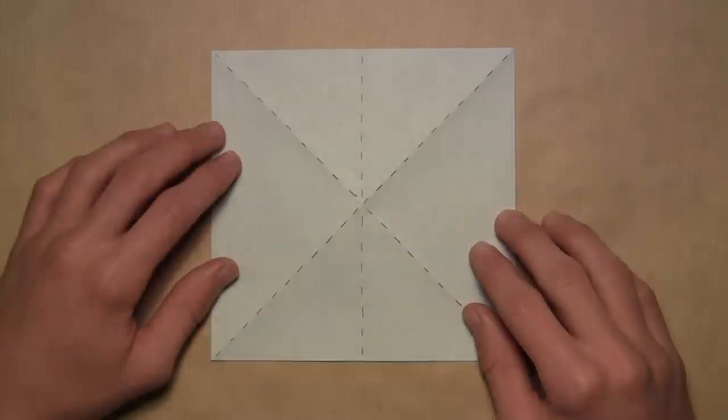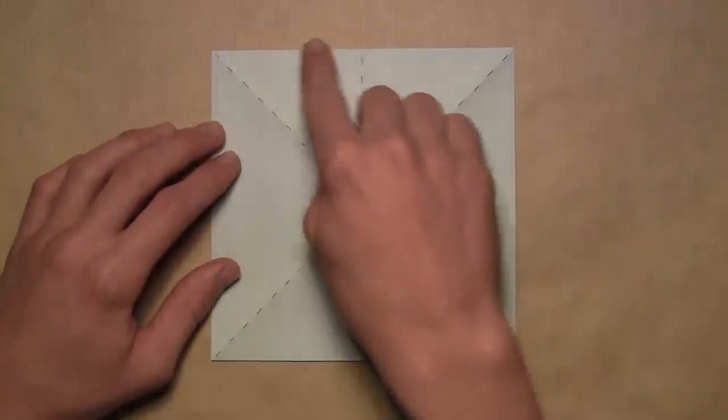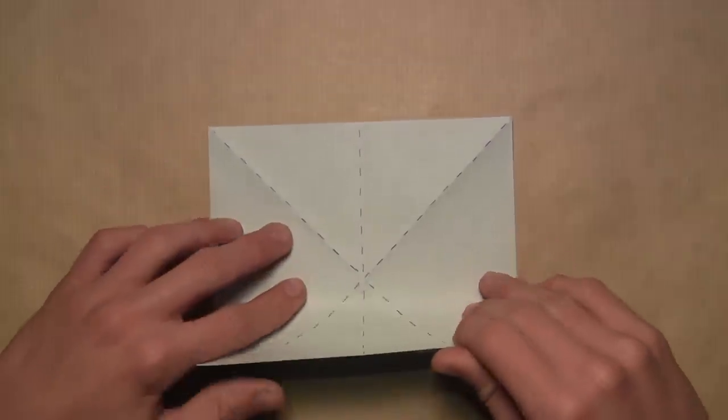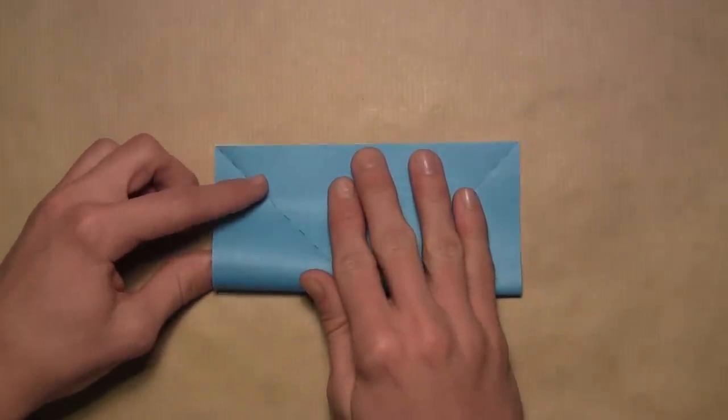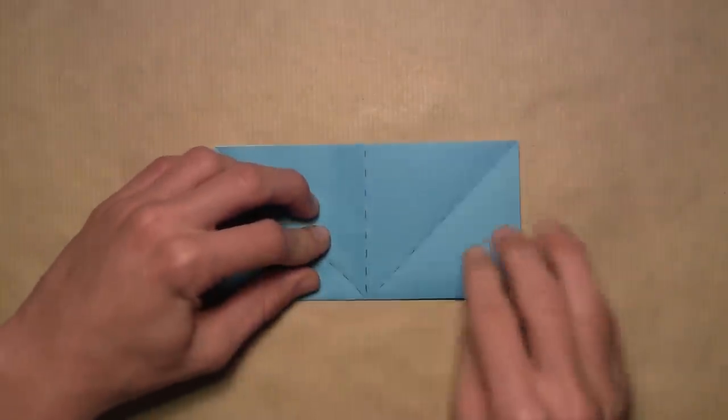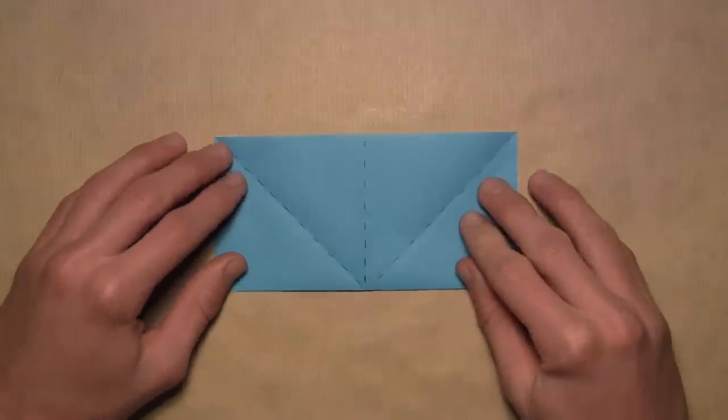And now we're going to do the same exact thing. So we're going to take this bottom edge and fold it up to the top edge just like we did in the opposite direction. Once again, align the corners and the edges, then make your crease, and then the model should look like this.